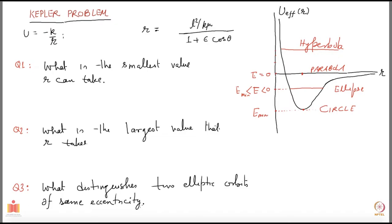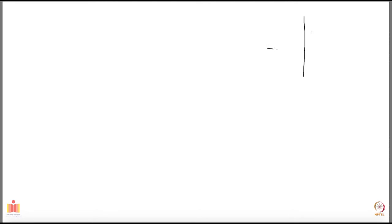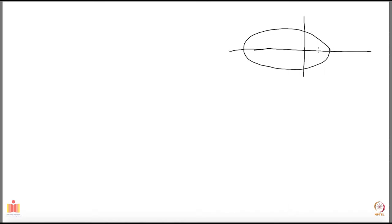Let us try to answer these questions. The orbit equation is r equals L squared over k·mu times 1 over 1 plus epsilon cos theta, and theta is measured with respect to a reference line. Let us say theta is pi over 2: cos theta equals zero and you are left with 1 in the denominator, so r equals L squared over k·mu. I will call this distance rho.